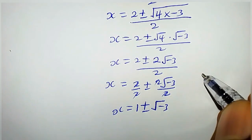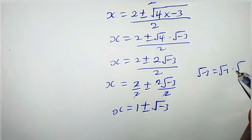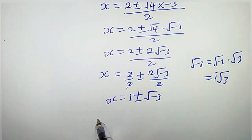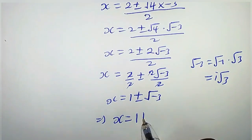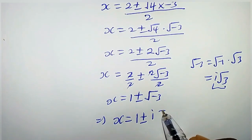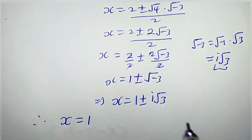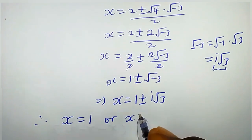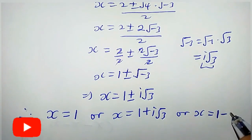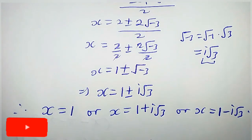We can rewrite the square root of negative 3 as the square root of negative 1 times the square root of 3. We know that square root of negative 1 is the complex number i, so we have i times root 3. Therefore, our solutions are x equals 1 as the first solution, x equals 1 plus i root 3, or x equals 1 minus i root 3. These are all the possible solutions for this cubic equation.